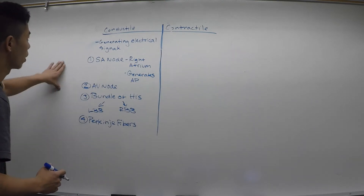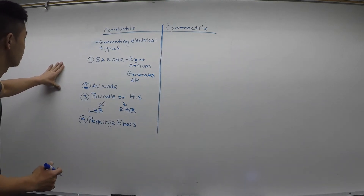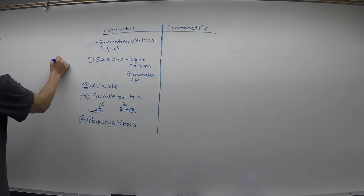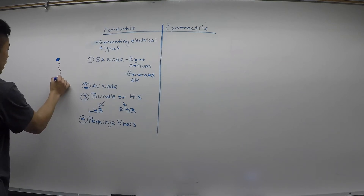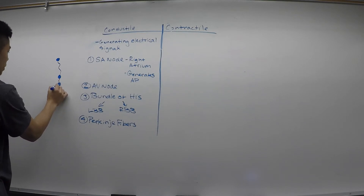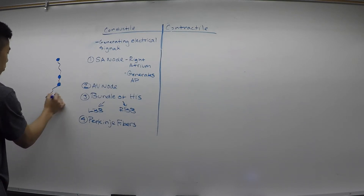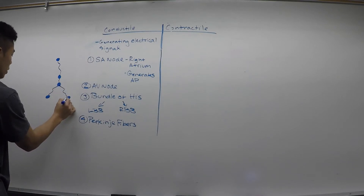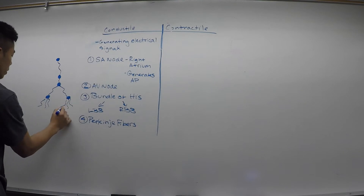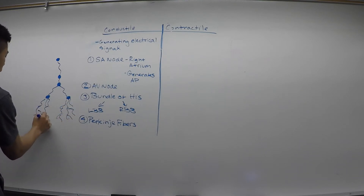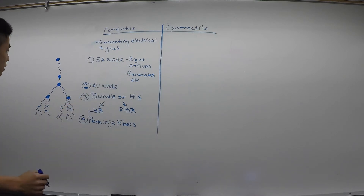So if you think about our conductile cardiomyocytes, we start off with our SA node, go down to our AV node, which breaks off into the bundle of His, which breaks off into the left and right bundle branches. These get more and more branched and soon turn into the Purkinje fibers, which are the most branched of them all and are connected to our contractile cardiomyocytes.